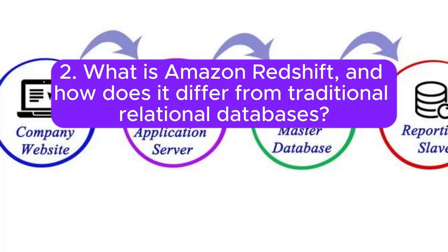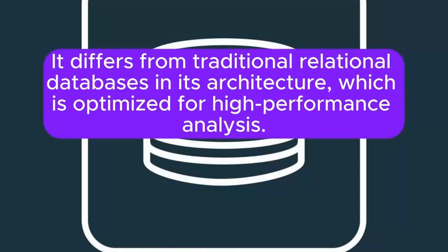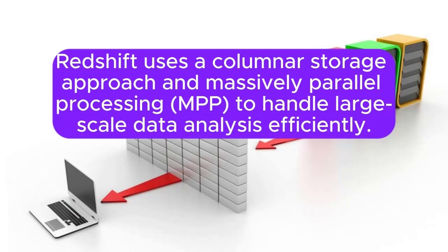2. What is Amazon Redshift and how does it differ from traditional relational databases? Answer: Amazon Redshift is a fully managed data warehouse service that allows for fast querying and analysis of large datasets. It differs from traditional relational databases in its architecture, which is optimized for high-performance analysis. Redshift uses a columnar storage approach and massively parallel processing (MPP) to handle large-scale data analysis efficiently.